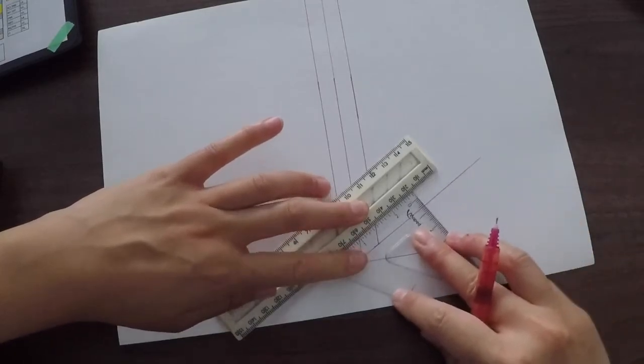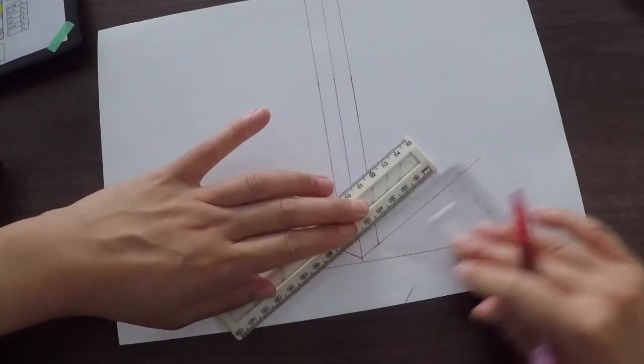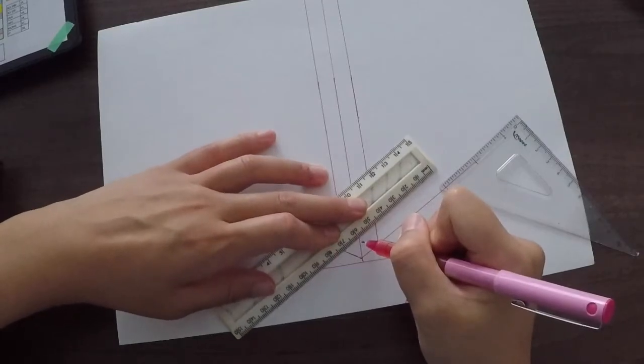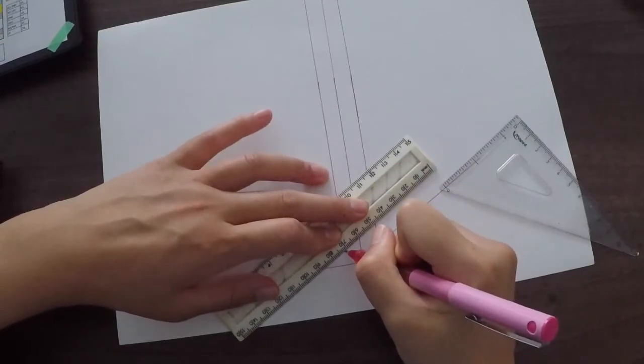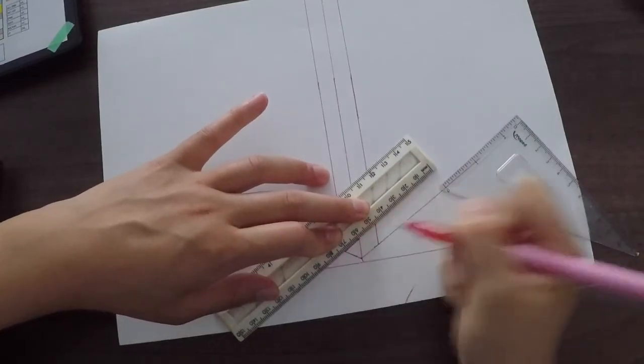And it is the same. As I move up, it's still 0.5 centimeters. That means that line is correct. So what I'm going to do is, from this point, draw a line going towards the middle line.